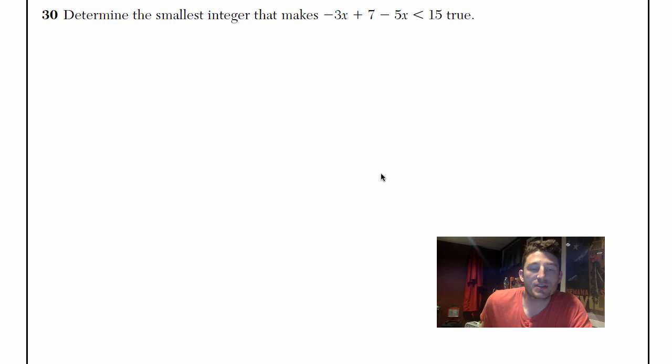All right. Number 30. This one says determine the smallest integer that makes -3x + 7 - 5x less than 15 true.